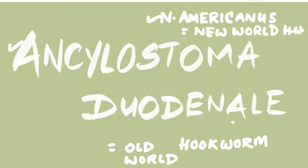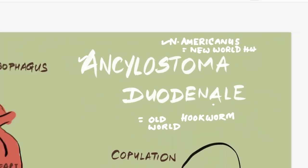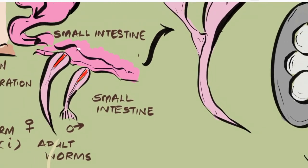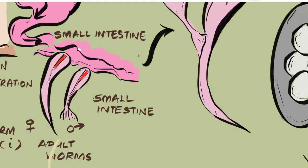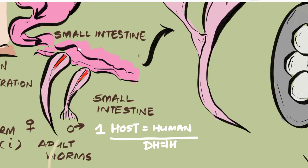Many people have asked how to remember life cycles easily, so in this video I'll try to make this complex life cycle a little more simplified. I always start with the host. In the case of hookworm, there is only one host — human beings. Since there is only one host, that means it is both the definitive host and the intermediate host.